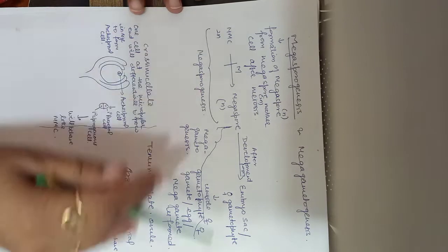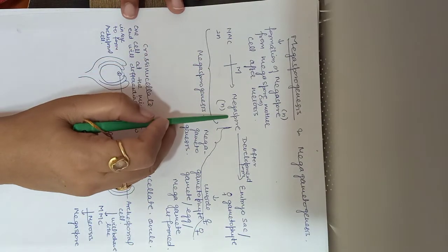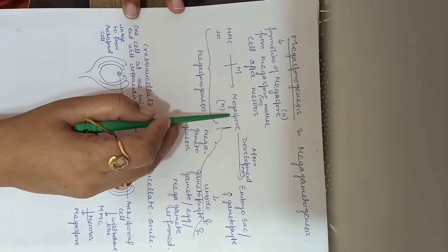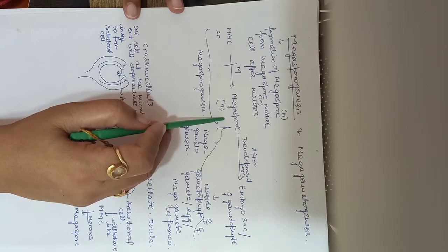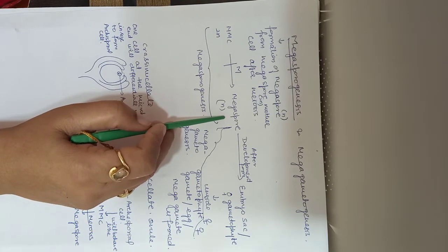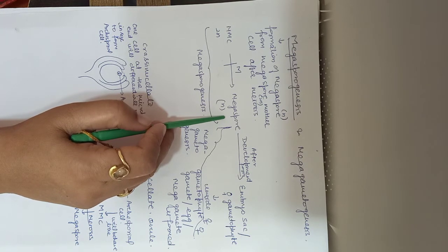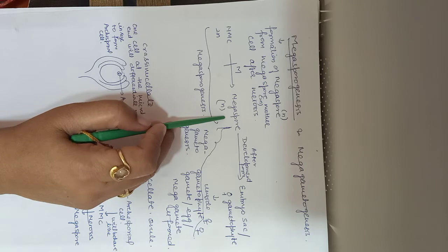The megaspore mother cell, which is diploid in nature, undergoes meiosis to form megaspores which are haploid. Four megaspores will be formed. Out of these four megaspores, three will degenerate and one will remain. This type of process is known as monosporic development, because further development takes place only in one megaspore — the remaining three megaspores degenerate.